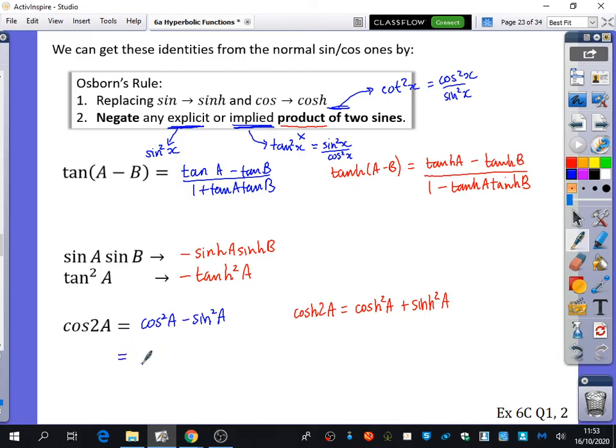Sam, do you have those ones written down as well? So they are 2 cos squared A minus 1.